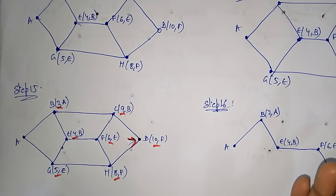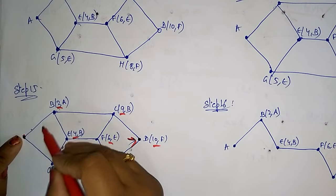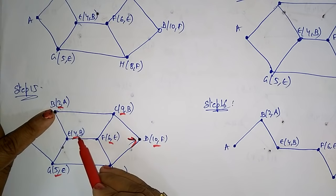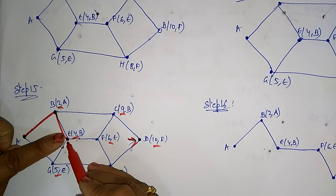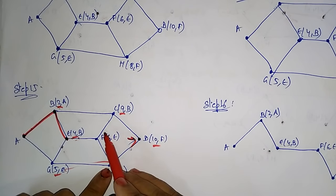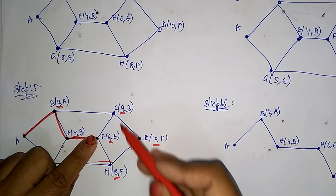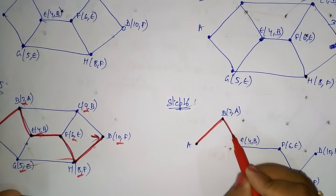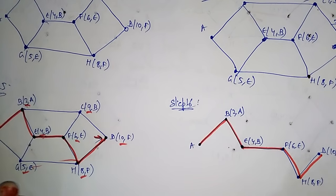Now we trace back the shortest path. From A, adjacent nodes are B and G — B (cost 2) is smallest, so go to B. From B, adjacent nodes C and E — E (cost 4) is smallest, so go to E. From E, go to G (cost 5, smallest). From G, go to F. From F, adjacent nodes H and C — H (cost 8) is smallest, so go to H. From H, go to D. The shortest path is A→B→E→G→F→H→D. This method is called Dijkstra's algorithm. Thank you.